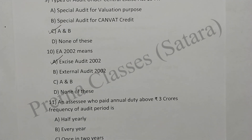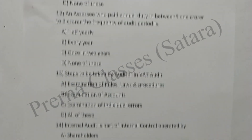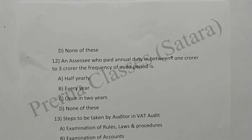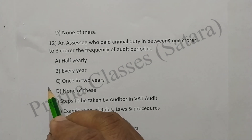Question 11: An assessee who paid annual duty above 3 crore — frequency of audit report is every year. Option B is correct. Question 12: An assessee who paid annual duty between 1 crore to 3 crore — the frequency of audit report is once in two years. Option C is correct.